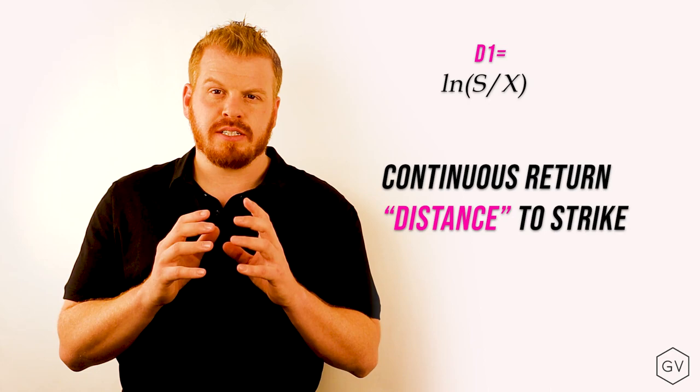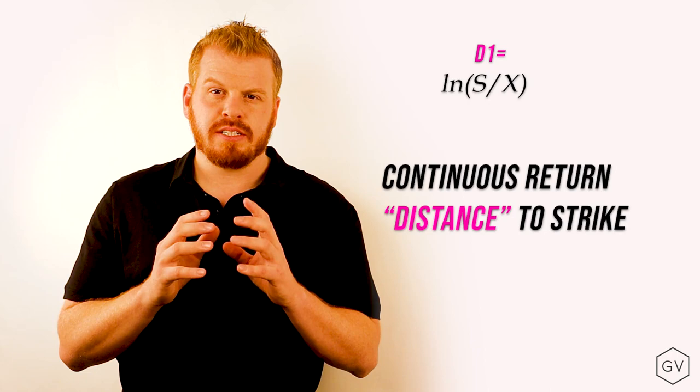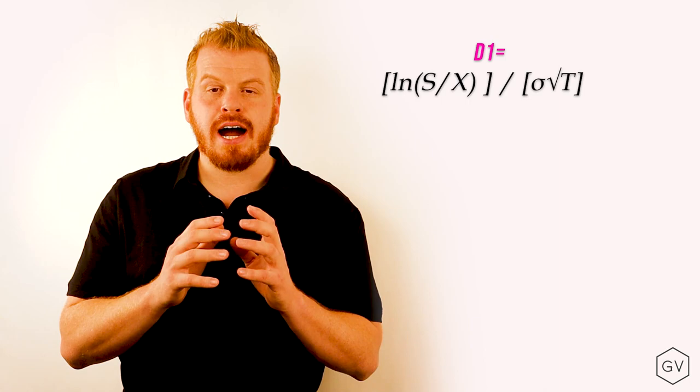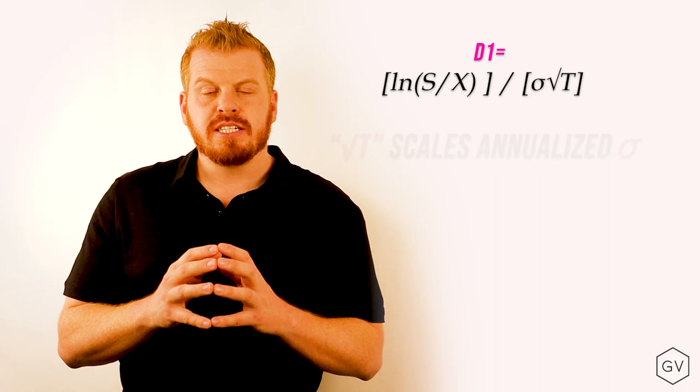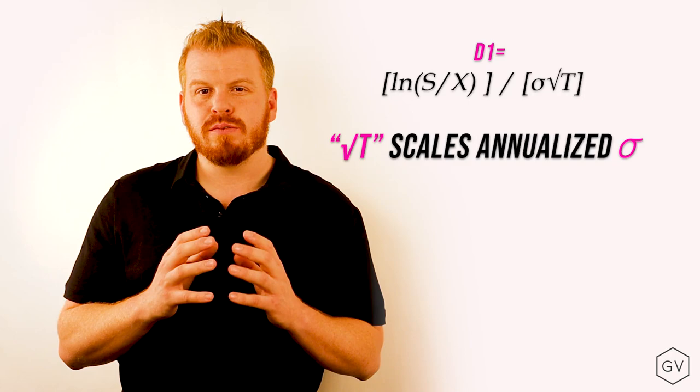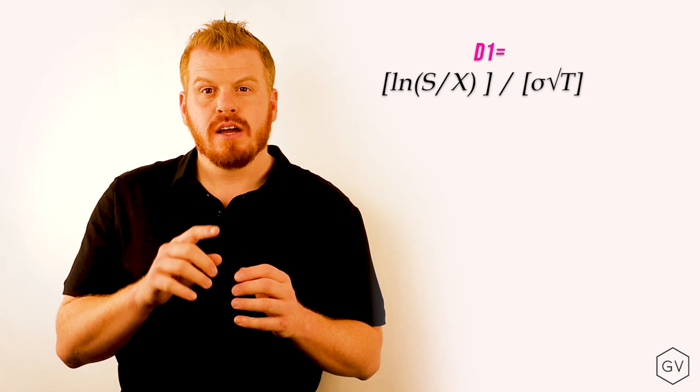Once we've converted our price relative in continuously compounded terms, what we want to do next is divide it by the standard deviation times the square root of time. The reason why we times it by the square root of time is because the standard deviation or volatility is quoted in annual terms. And so we want to adjust it for time until expiration. Square root of time because standard deviation is the square root of variance.